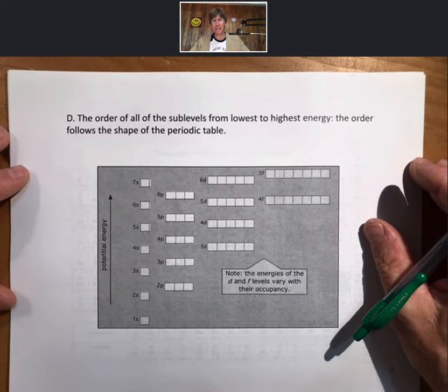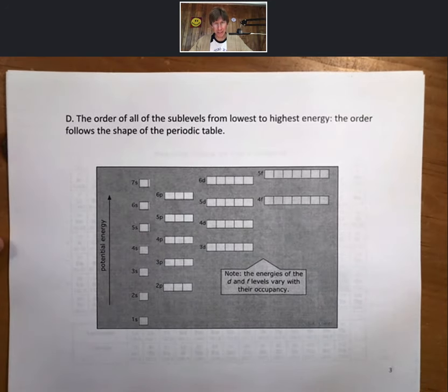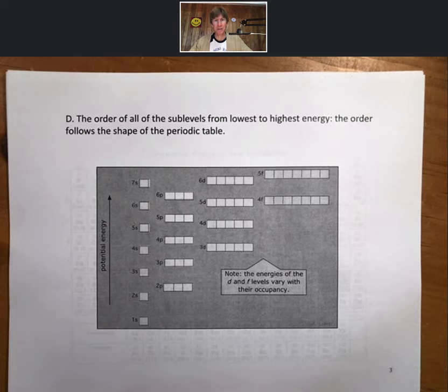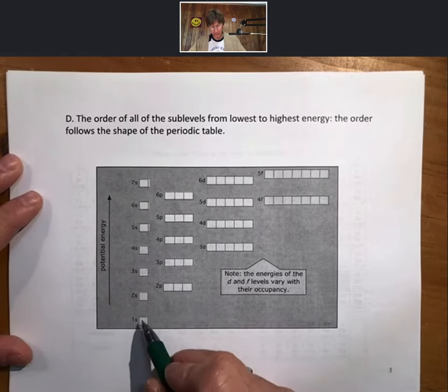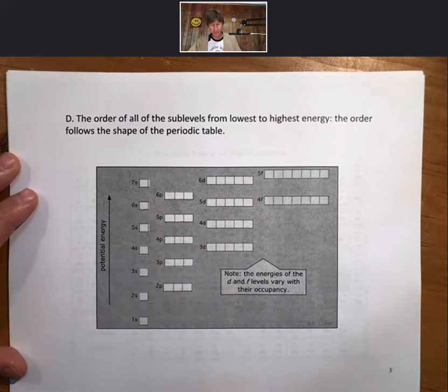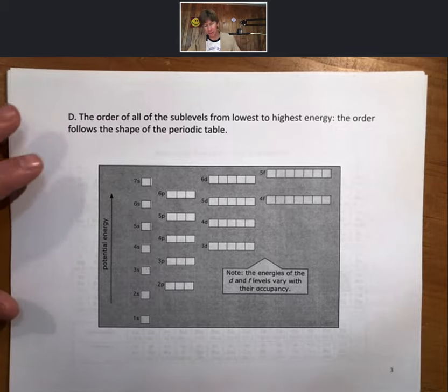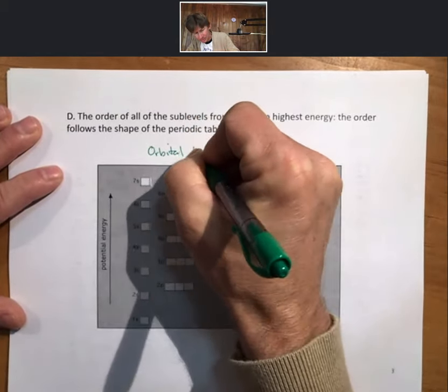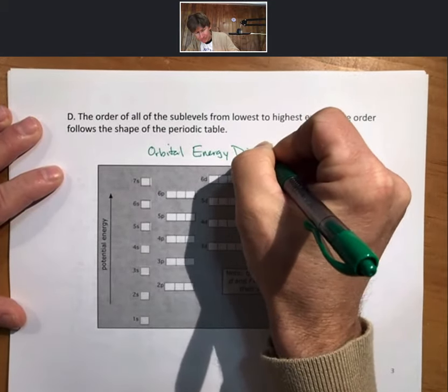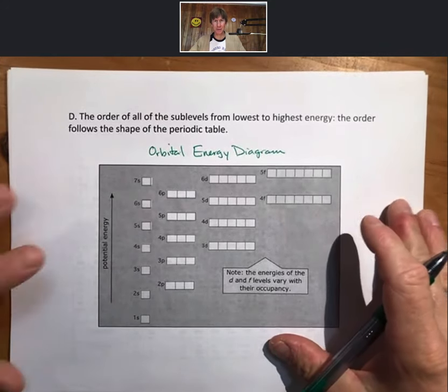So the order of all the sub-levels from lowest to highest energy follows the shape of the periodic table. And this order is something you have to memorize. There's a couple different ways to memorize it. I'm going to suggest you use the shape of the periodic table. There are other patterns that you can draw. It doesn't matter to me how, in the end, you end up memorizing them as long as you do. It goes from 1s to 2s to 2p, 3s, 3p, 4s, 3d. And so as you're going up, this is energy, or most notably potential energy. And this is what's called an orbital energy diagram. And you'll see with boxes, each box represents one orbital. We'll tell you how to put the electrons in.